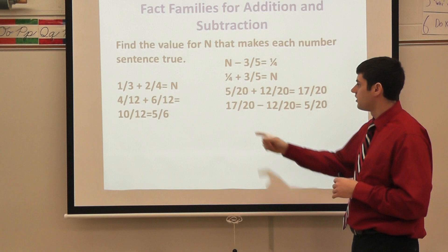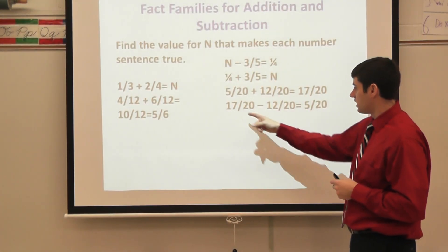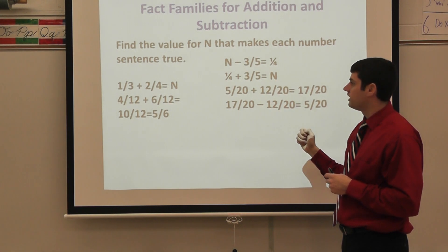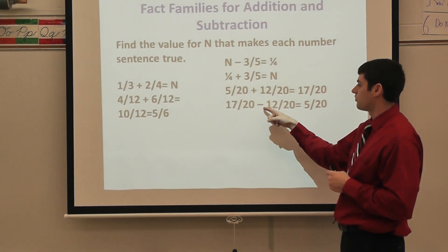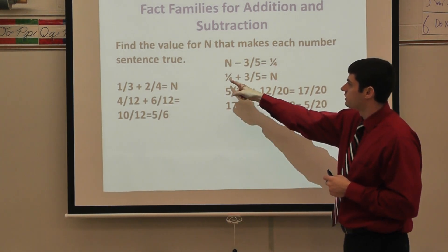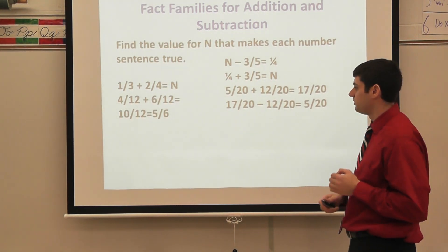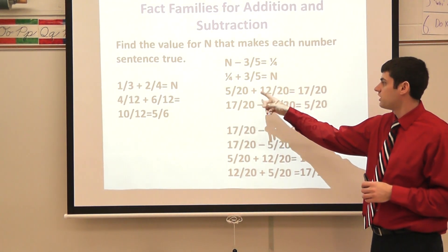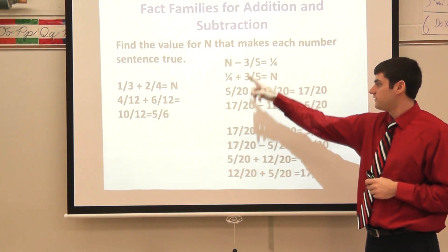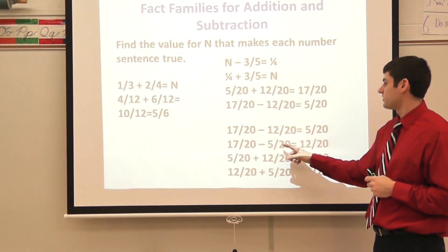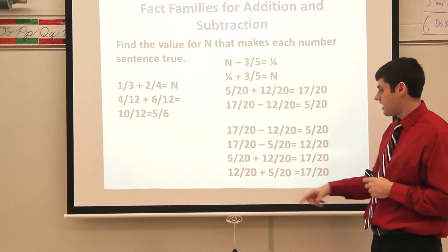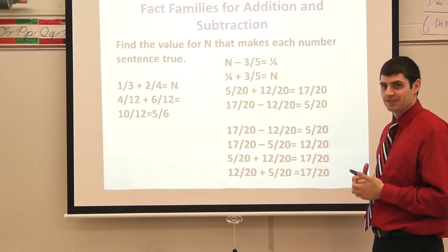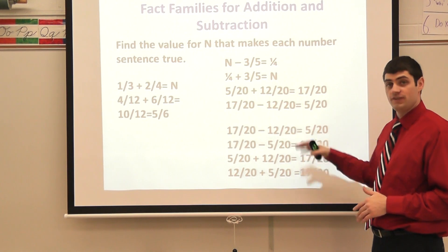How do I know that n equals seventeen twentieths? We just talked about fact families — let's reverse it. Seventeen twentieths, which is what I think n is, minus three fifths, which I renamed as twelve twentieths. So seventeen twentieths minus twelve twentieths equals five twentieths, which is the same as one fourth. Now let's look at the full fact family using these three numbers — seventeen twentieths, twelve twentieths, and five twentieths: seventeen twentieths minus twelve twentieths is five twentieths; seventeen twentieths minus five twentieths is twelve twentieths; five twentieths plus twelve twentieths is seventeen twentieths; and twelve twentieths plus five twentieths is seventeen twentieths.